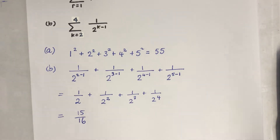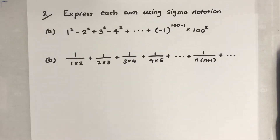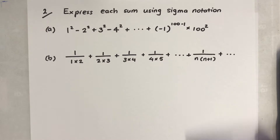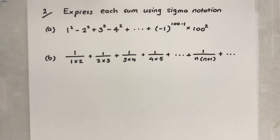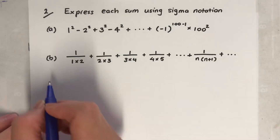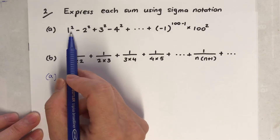That gives us 15 over 16. All right, that's all good. Now the other way around - let's see how it goes expressing each sum using sigma notation.